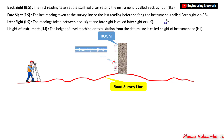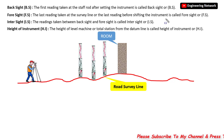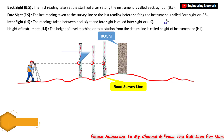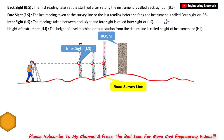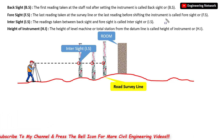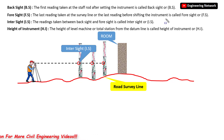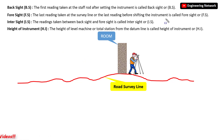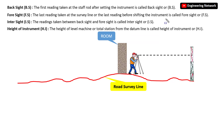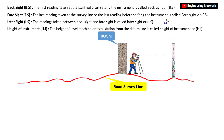Now in between these two readings — back sight and foresight — the remaining readings are called intermediate sight. For example, if I take a reading here, here, and here, all these readings are called intermediate sight. After shifting the instrument to a new position, again the first reading is called back sight or BS, the last reading at the end of the survey line is called foresight or FS, and all readings in between are called intermediate sight or IS.